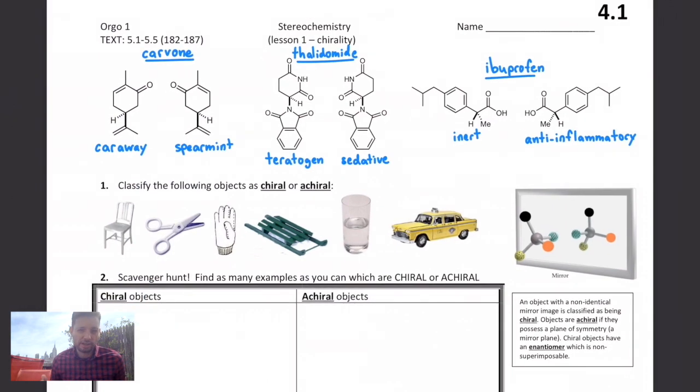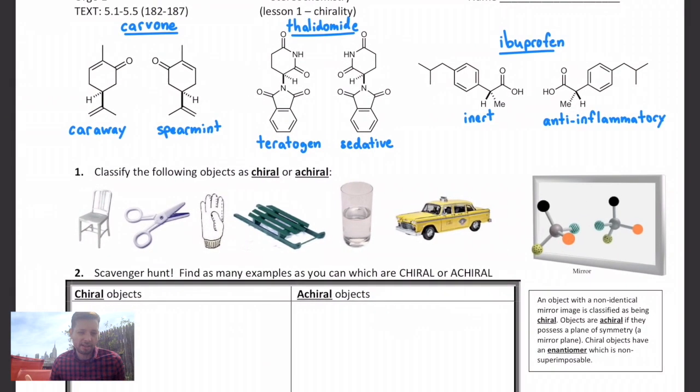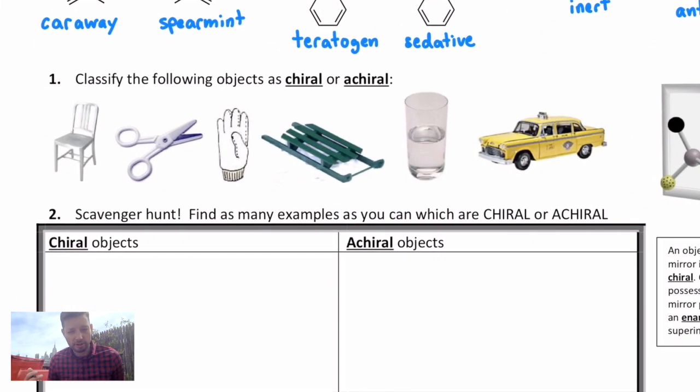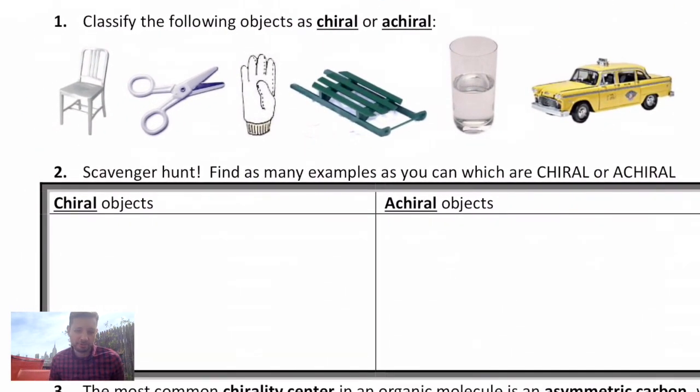So what we're going to do today is look at these terms chirality and stereoisomerism as they apply to everyday objects and as they apply to organic compounds. So first of all, what makes a molecule or an object chiral? Well chiral comes from the Greek word for handedness and something is chiral if it does not possess a plane of symmetry. It will have a mirror image that is not identical to it. Something is achiral if it does have a plane of symmetry running down some axis in the center of it and it does have an identical mirror image.